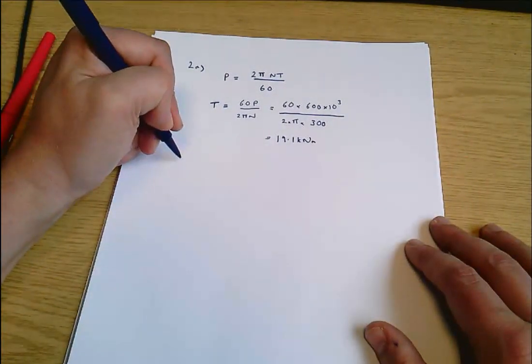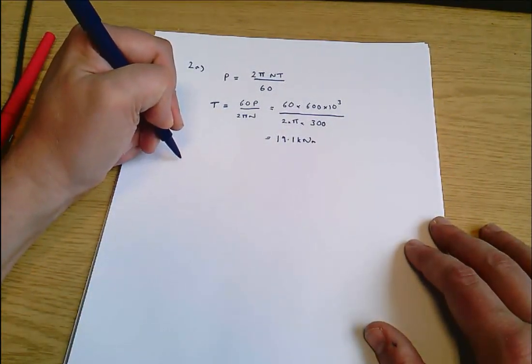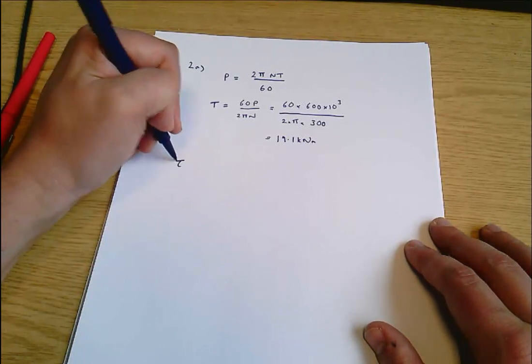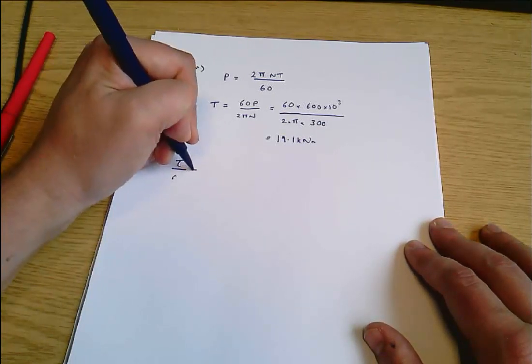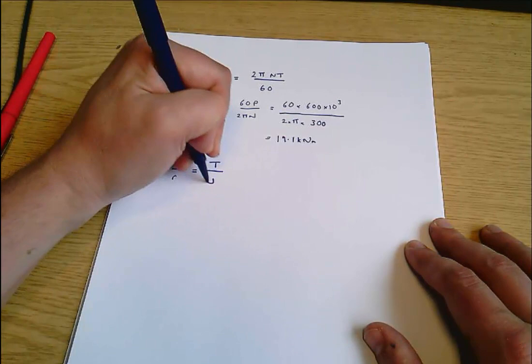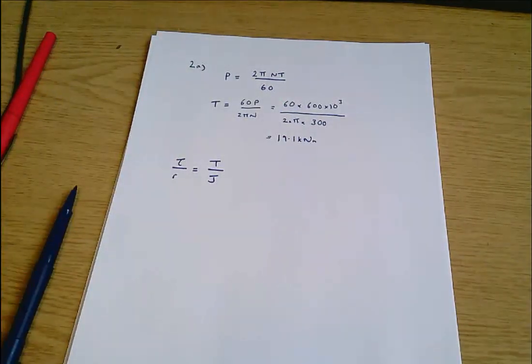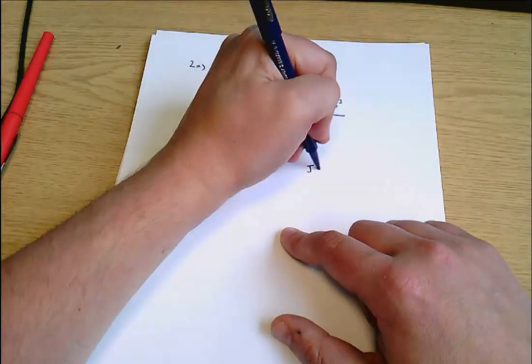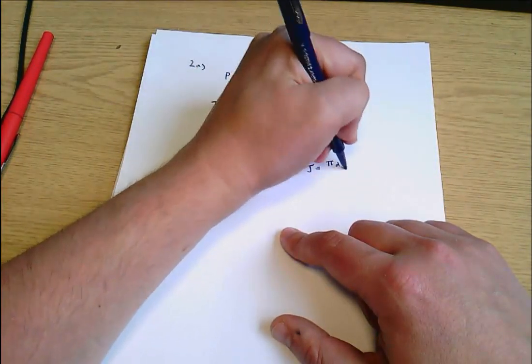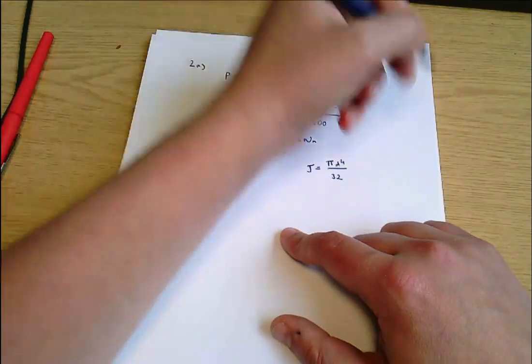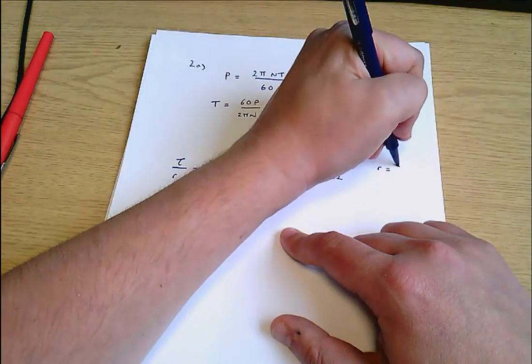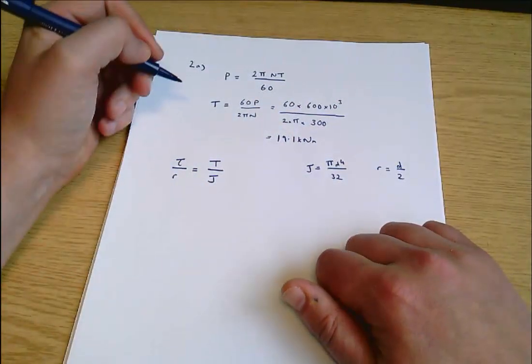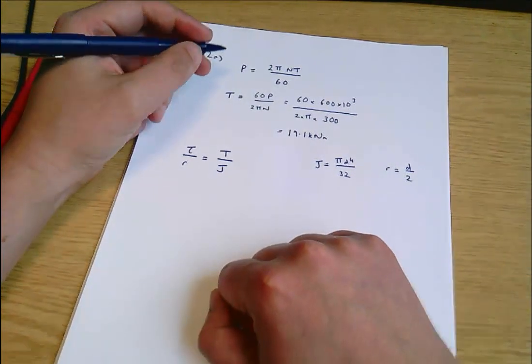Next up I need the general torque equation, which says the shear stress divided by the radius equals torque over J. I'm going to make a couple of notes: J equals pi D to the 4 on 32, and of course R also equals D on 2. That just means I can express everything in terms of the shaft diameter.